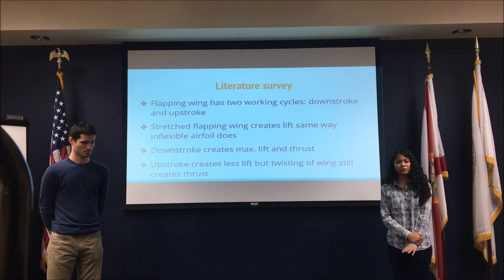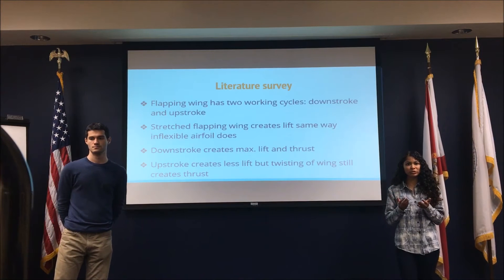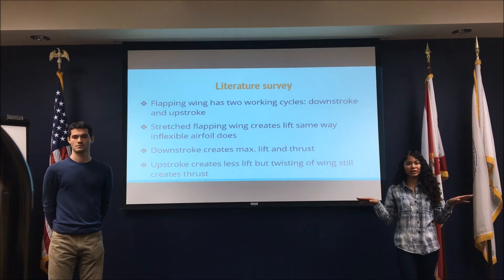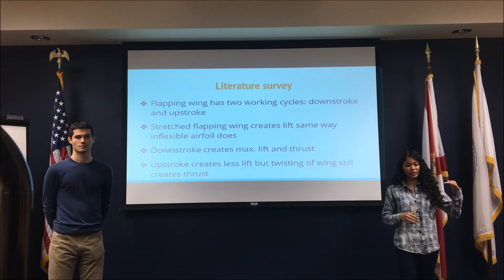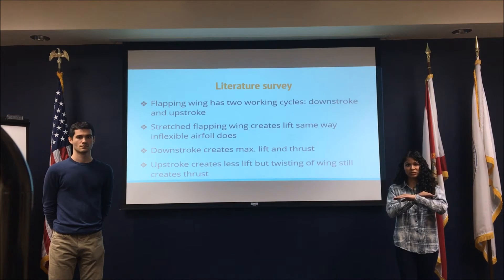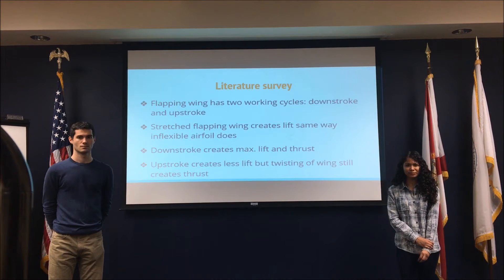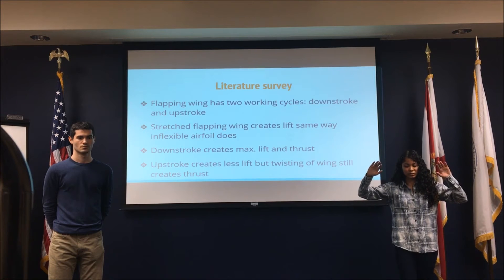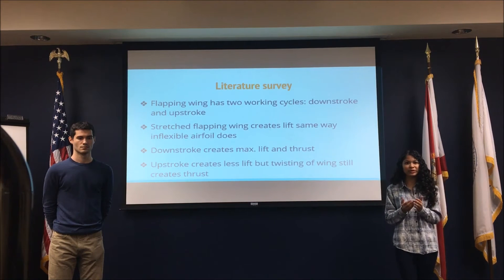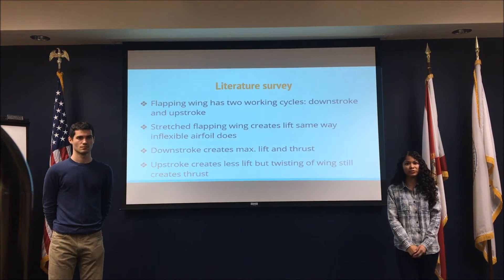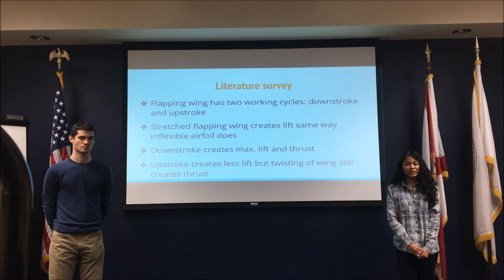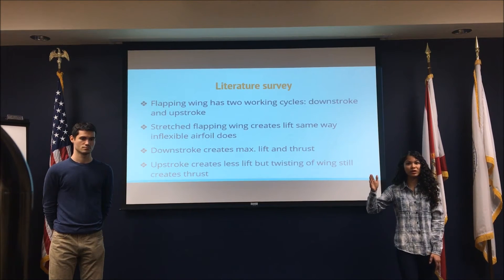The flapping wing model consists of two working cycles: the downstroke and the upstroke. As the flapping wing cuts through the air, the air on top has lower pressure and higher velocity, while the air underneath has higher pressure and lower velocity — this differential pressure creates lift. During the downstroke, the air is compressed very quickly, accelerating its velocity and creating maximum lift and thrust. During the upstroke, the wing creates less lift, but since the ends of the wing are twisted, it creates enough thrust to stay in the air.